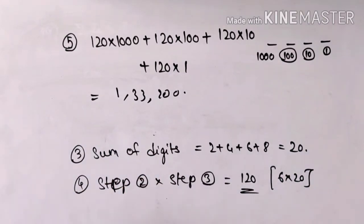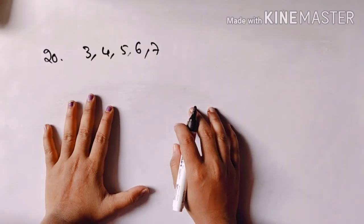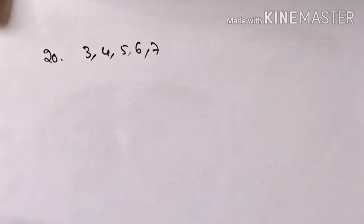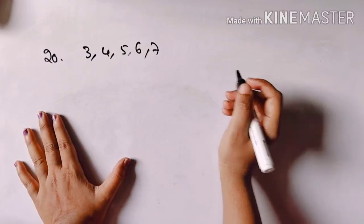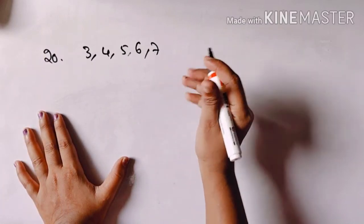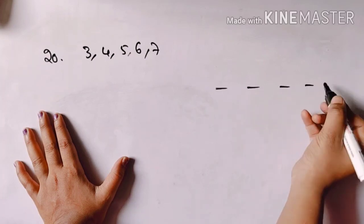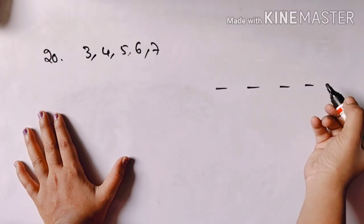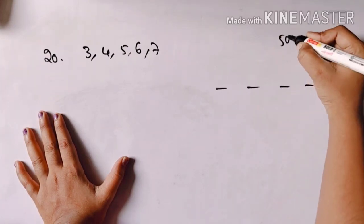The 20th question: we have some digits — 3, 4, 5, 6, 7. The restriction is to form numbers greater than 5000. So we need to form a 4-digit number that is 5000 or more. The thousands place must be 5 or greater.